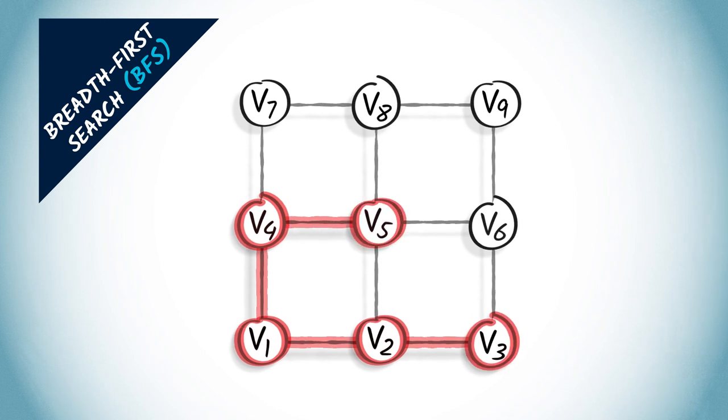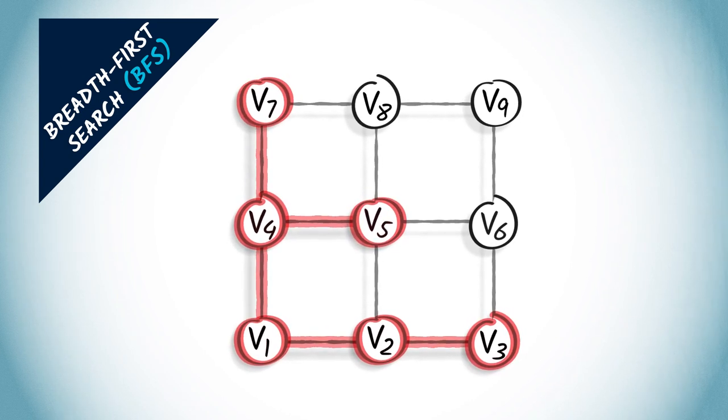We obtain V3, V5, and V7. Then, we explore the vertices three hops away from vertex V1.